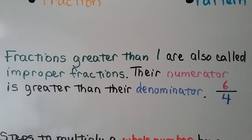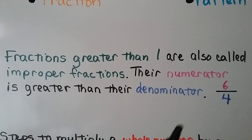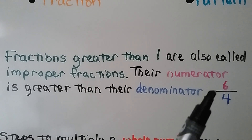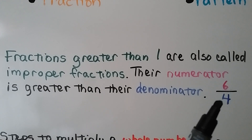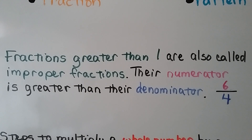Fractions greater than 1 are also called improper fractions. Their numerator is greater than their denominator. We have a numerator 6 that's greater than the denominator 4. 6 fourths is a fraction greater than 1, which is also called an improper fraction.